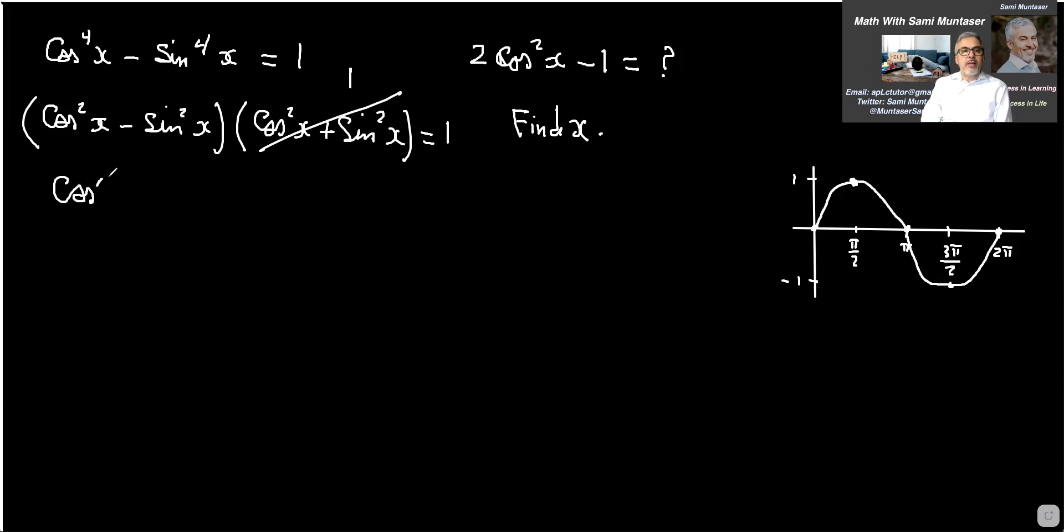So now you have the cos squared x minus sin squared x equals one. And what I'm going to do, I'm going to change the sin squared x to one minus cos squared x equals one.